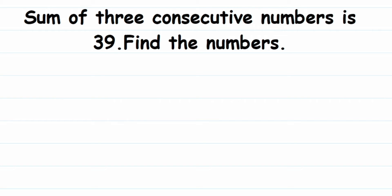In this question, they have given that if I add three consecutive numbers I get 39, and I have to find out what those original numbers are. Since we don't know what those numbers are, I'm going to assume a variable. I'm taking x and I'm going to solve this.